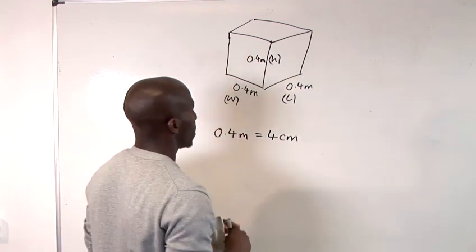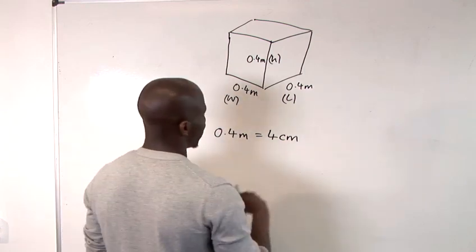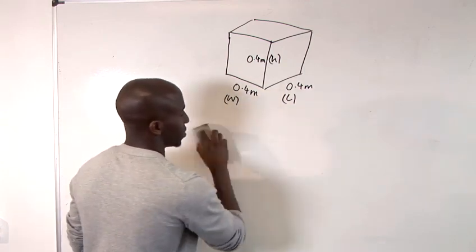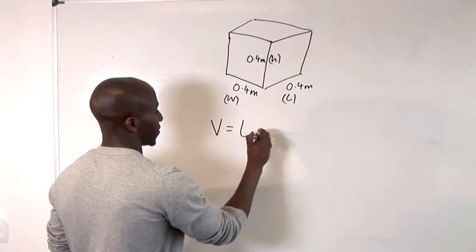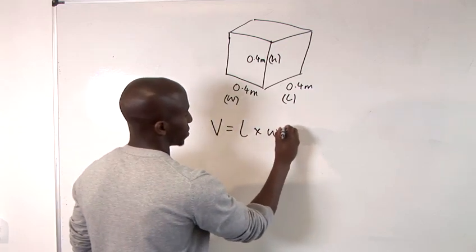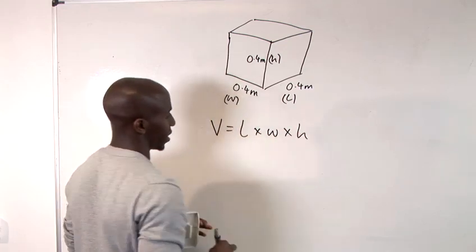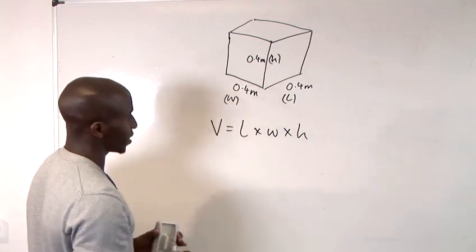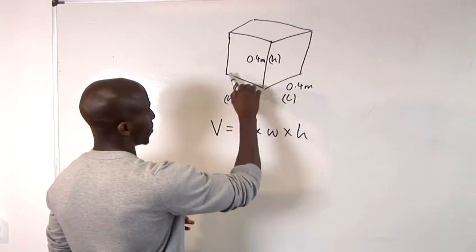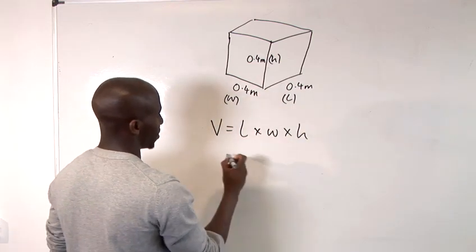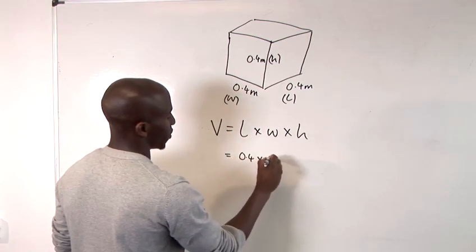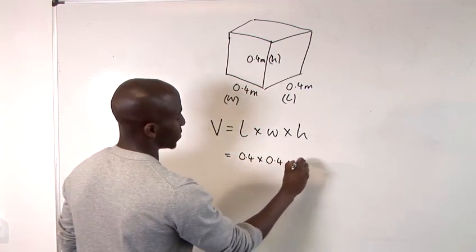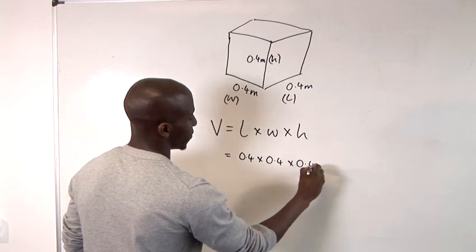Your basic volume equation is length times width times height. If we take all of our variables here and substitute them in, we have 0.4 times 0.4 times 0.4.